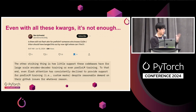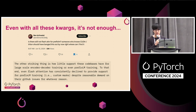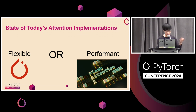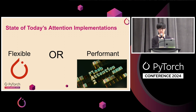Even though you have all these quirks, it's still not enough. Constantly you see people on Twitter complaining there's still no prefix LM for Flash Attention, that the Flash Attention repo doesn't support their favorite attention variants. And so you end up with this current state of the world where you must choose between flexibility — implementing everything with native PyTorch matmuls — or a performant implementation using a single monolithic Flash Attention operator, with very few choices on how to modify it.